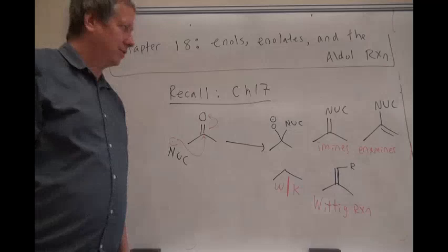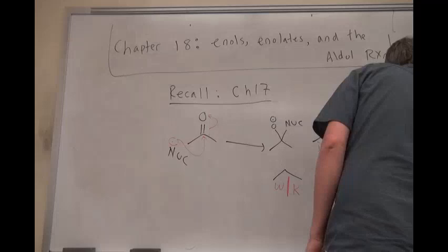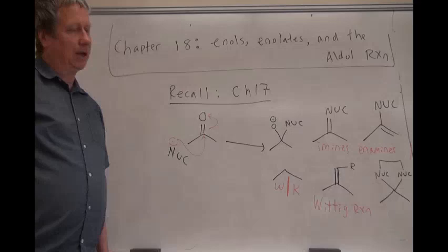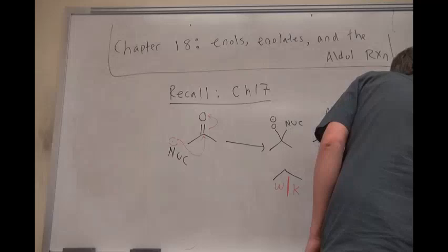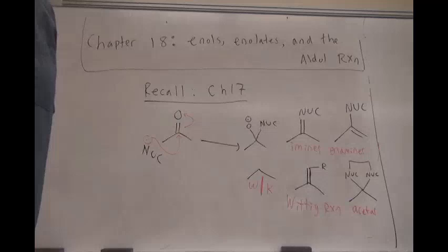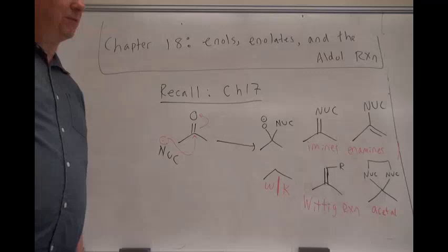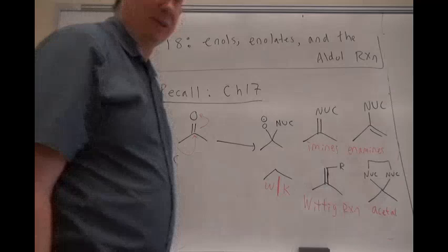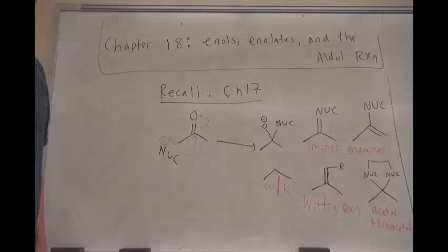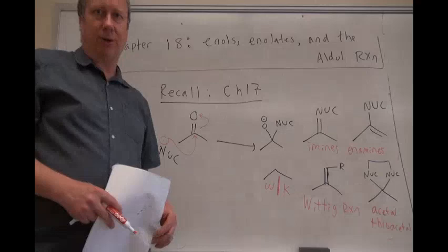We also saw the Wittig reaction, which converted a ketone to an alkene. And we saw cyclic acetals — where the nucleophile was oxygen — and thioacetals, which are the sulfur equivalent. So those are the key reactions of Chapter 17: nucleophiles attacking ketones and aldehydes.